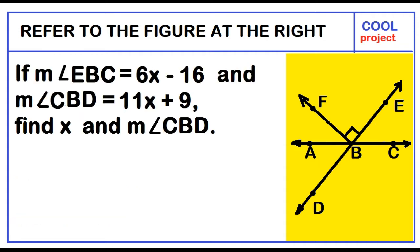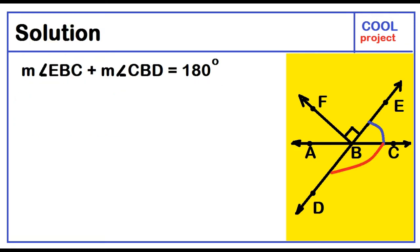If the measure of angle EBC equals 6x minus 16, and the measure of angle CBD is 11x plus 9, find x and the measure of angle CBD. Angle EBC plus angle CBD are supplementary angles.